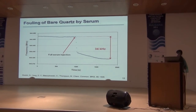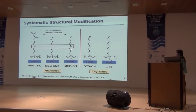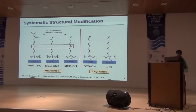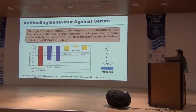We synthesized modifiers in our lab and did a systematic structural modification study. On one side we have the MEG family — monoethylene glycol — which has an internal ether oxygen atom within the chains, and on the other we have the alkyl family, which are straight carbon chains. We looked at different head functions and also compared molecules with the same terminal hydroxyl group but with and without the internal oxygen. Exposing these surfaces to serum, the MEG family was by far the best at reducing fouling, with MegOH being superior at around 3,000 Hz shift compared to 34,000 Hz for bare quartz.